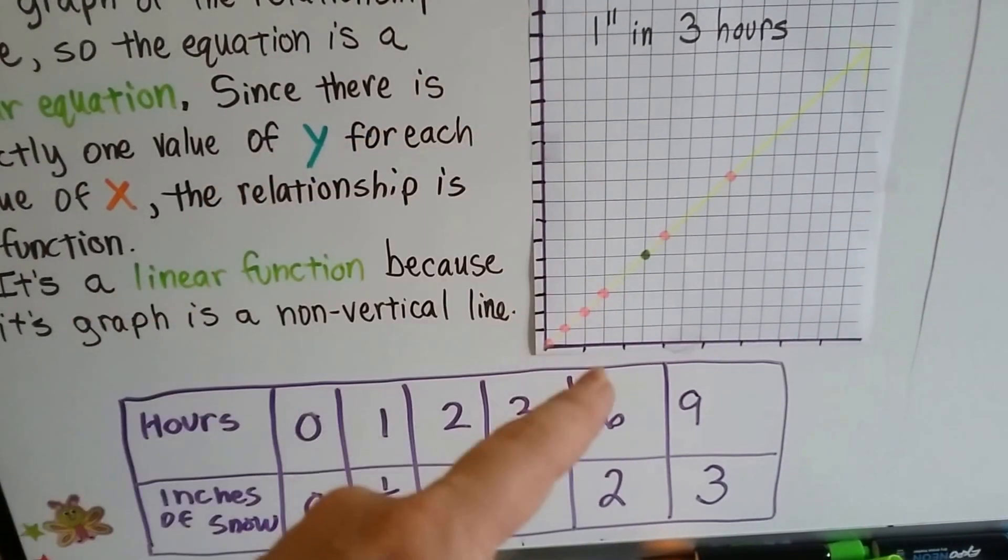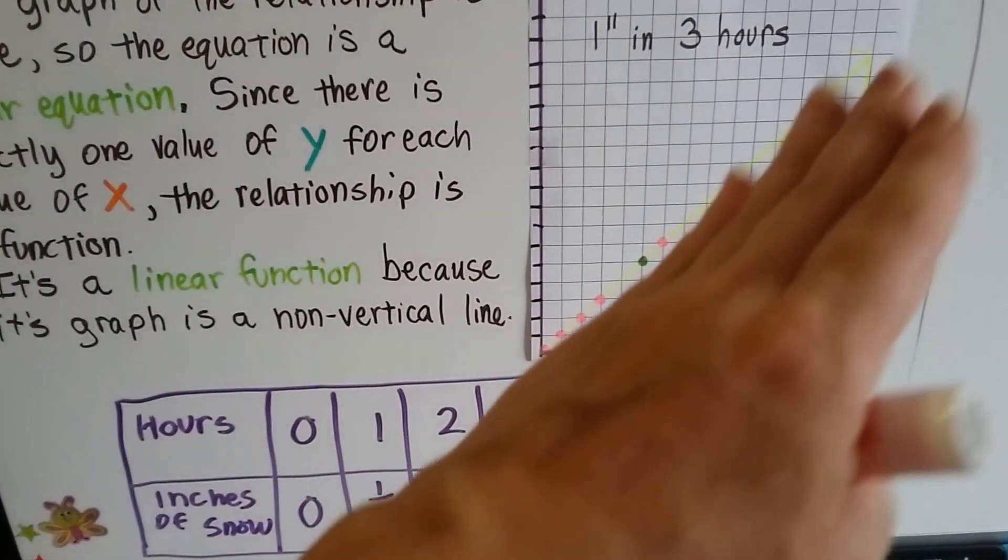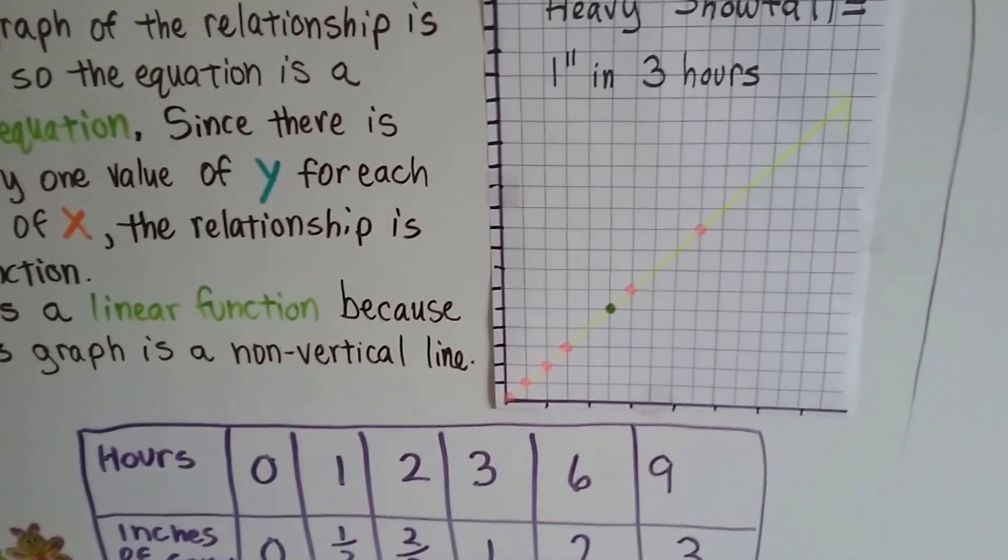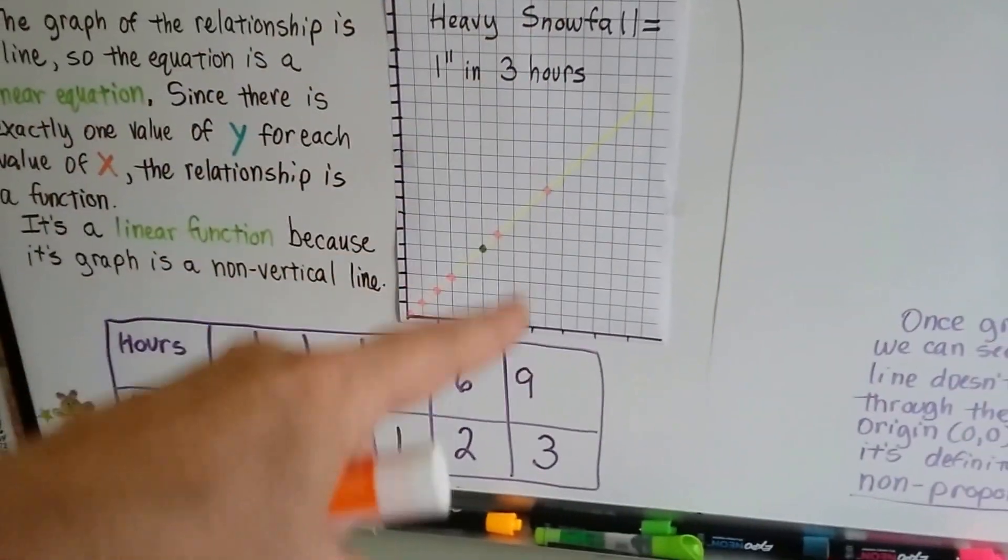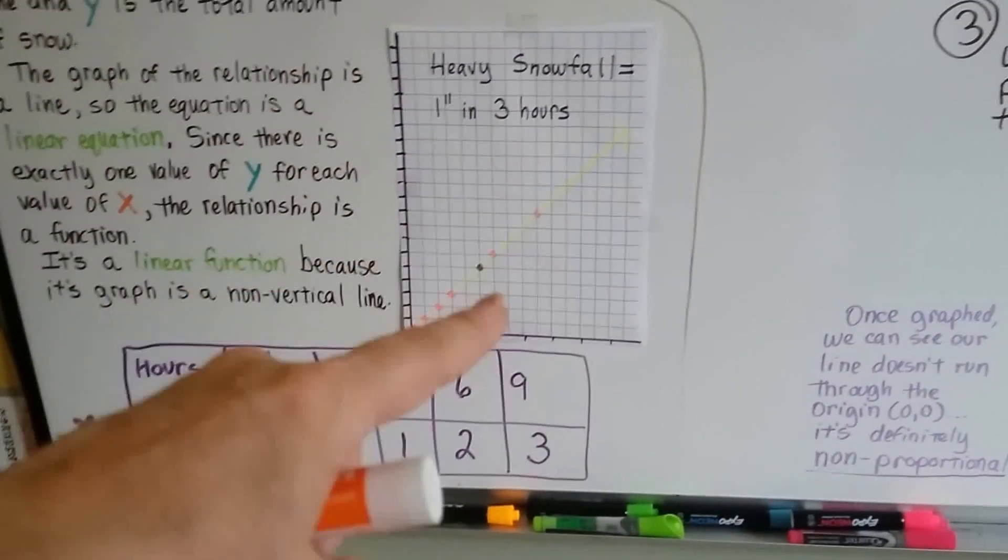Remember, vertical goes straight up and down. Because this is going on a slant like this, it's non-vertical, so it's a linear function. Remember our vertical line test? We drew a vertical line to see through it, and we don't have points stacked on top of each other.